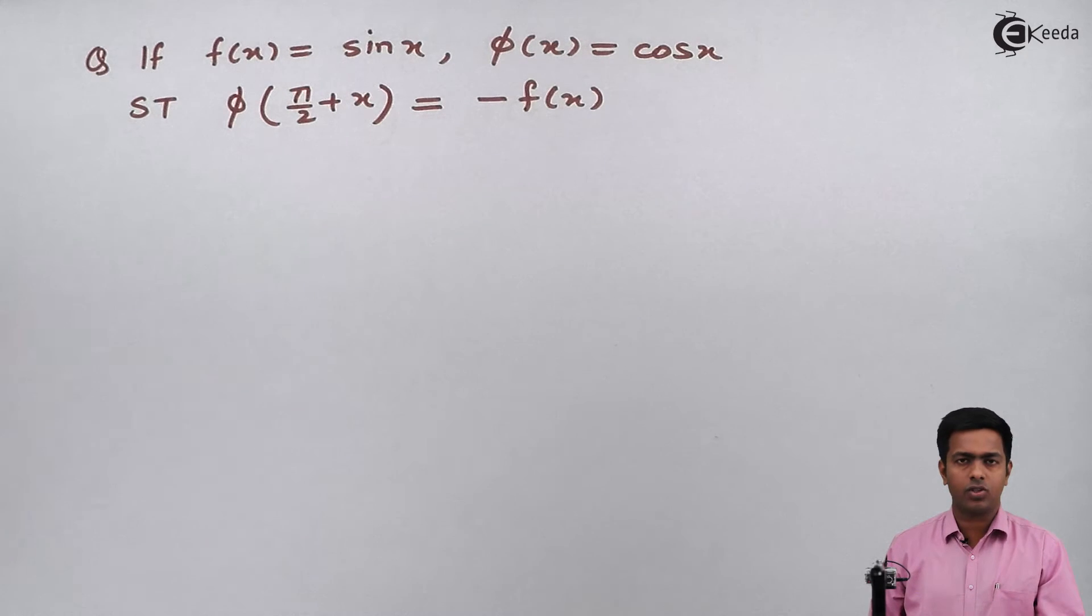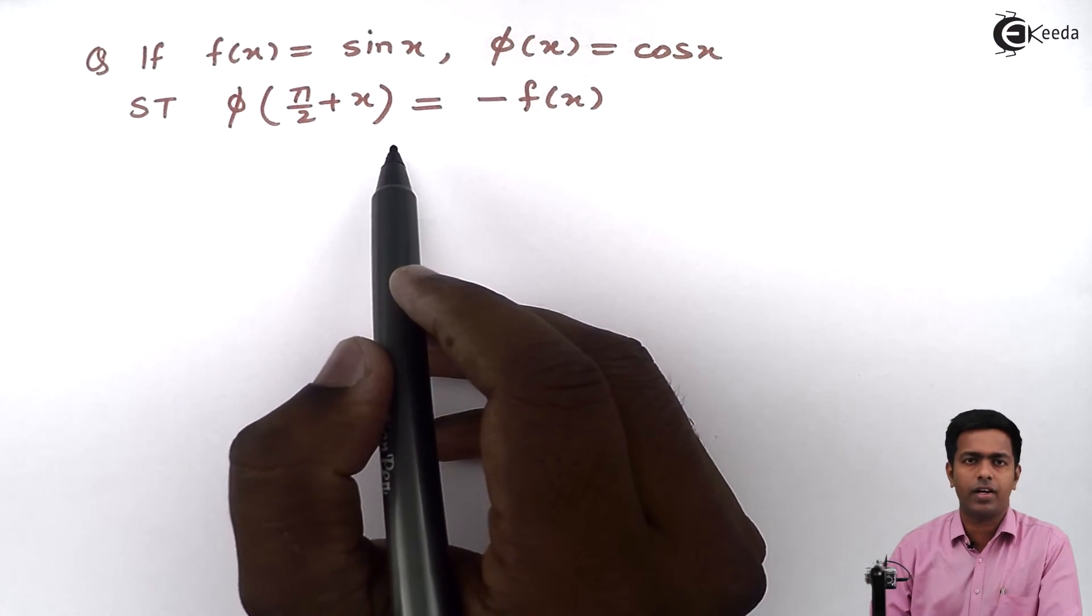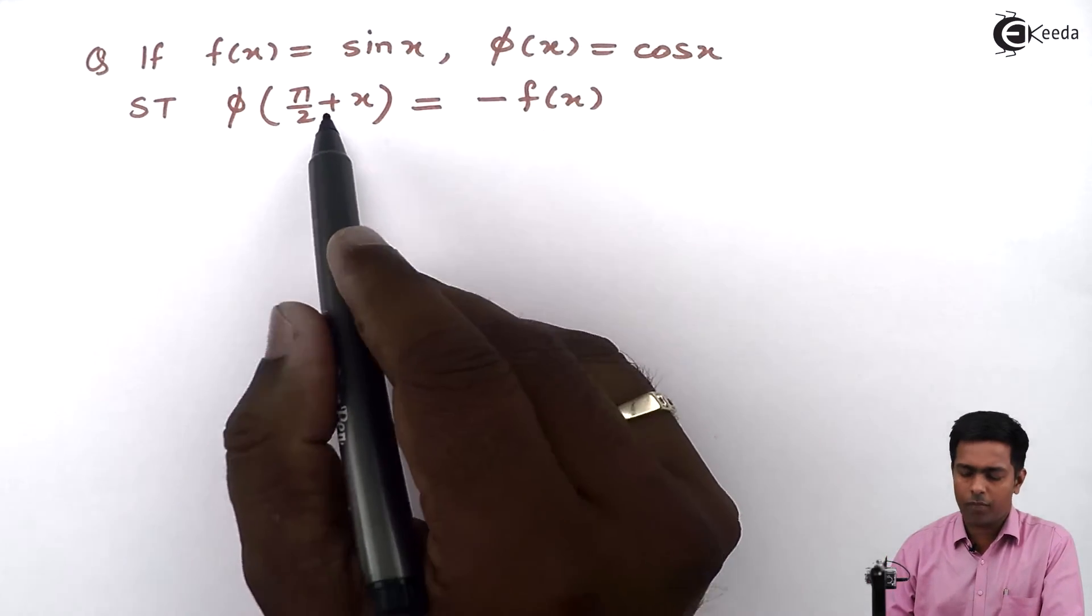So the value of f(x) is already given. So here I will start with the left-hand side function. So let us find out the value of φ(π/2 + x).